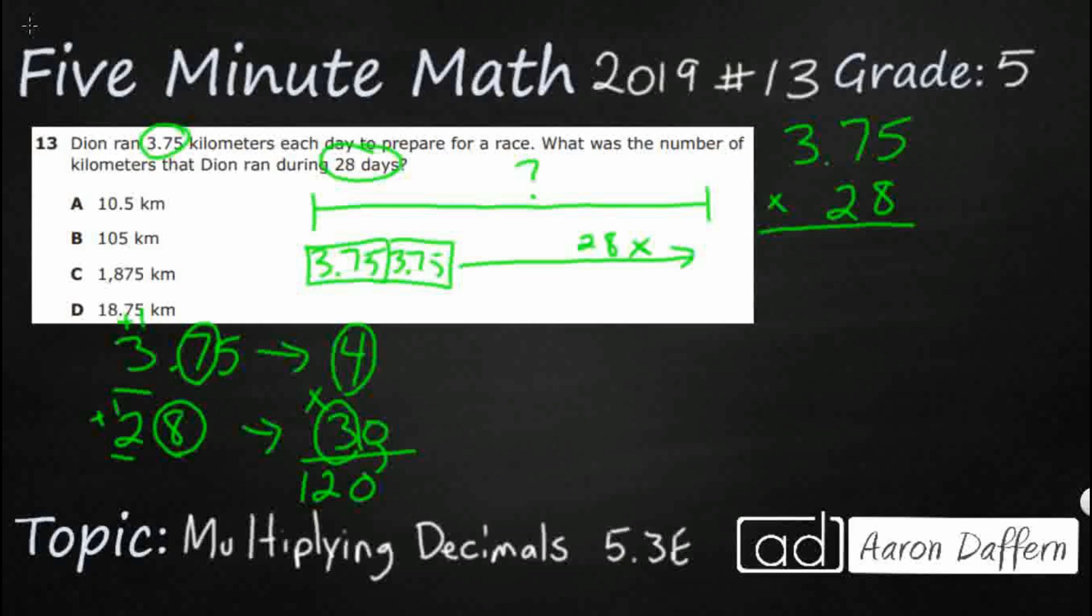So the only one that's actually even close is this B. And 105 is 15 away. But remember, I rounded both 3.75 and 28 up, which means I made my answer bigger than it really should be. So that kind of makes sense.